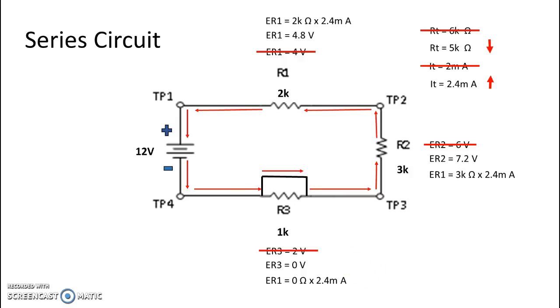Now, if I were to keep my black lead at test point 4, which we know to be 0, and put my red lead up at test point 2, my red lead would read 7.2 volts, which is the voltage drop on R2 minus 0. So we would see red of 7.2 minus 0, and that is the voltage of R2.